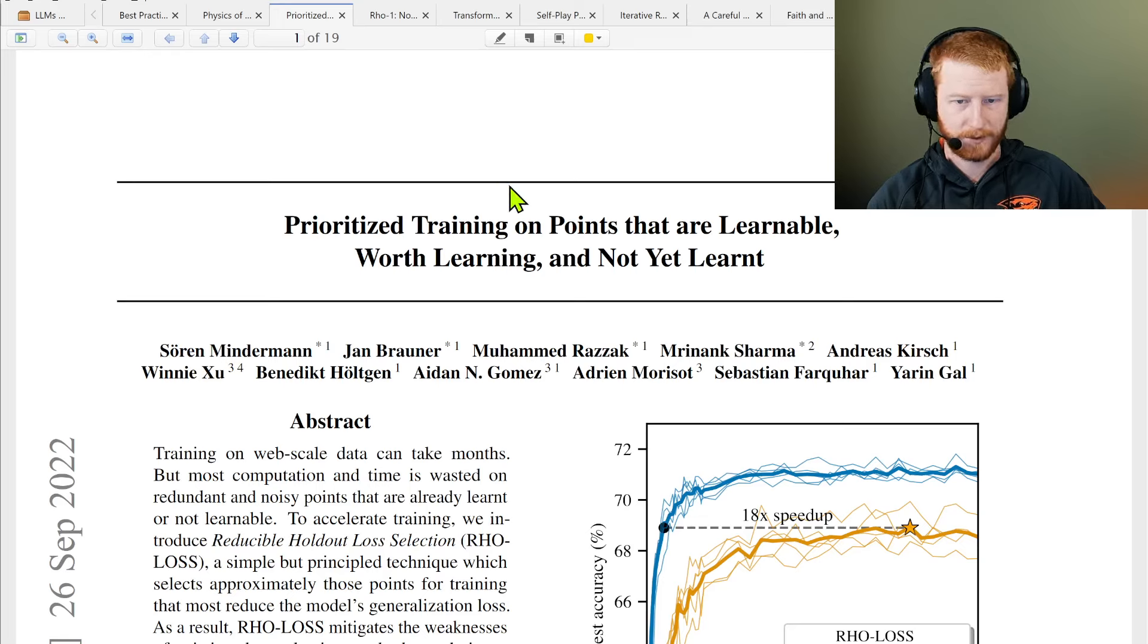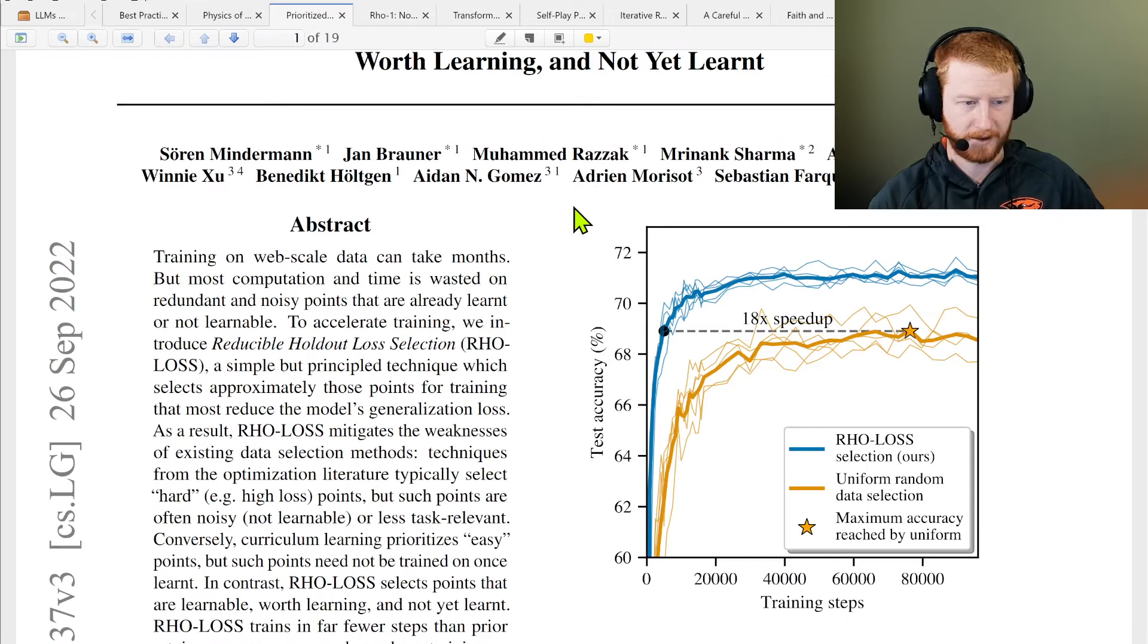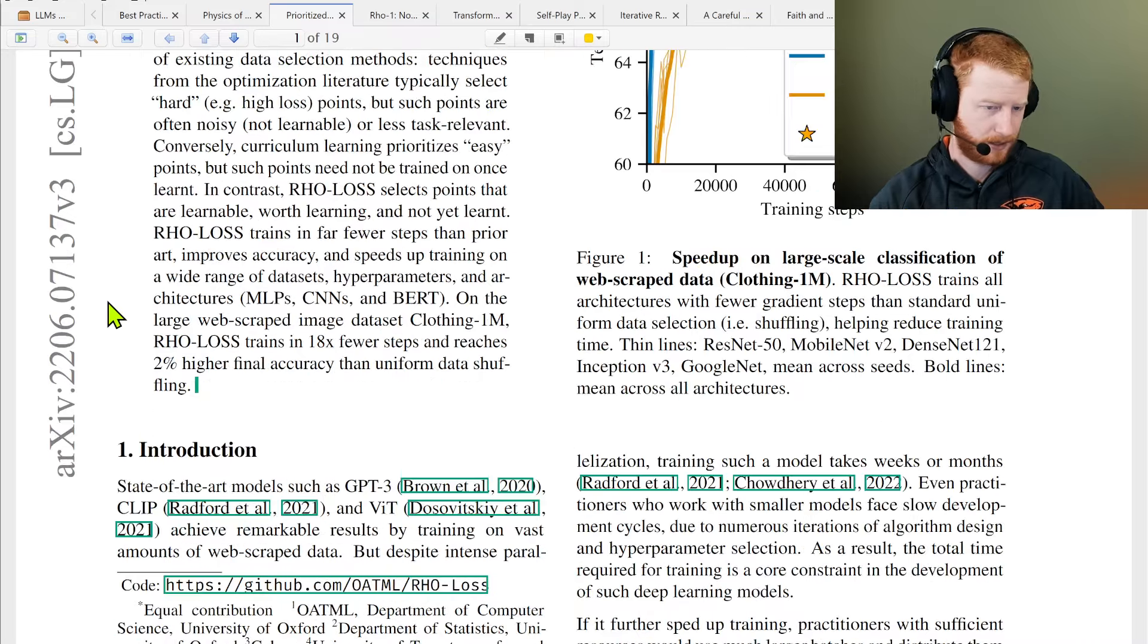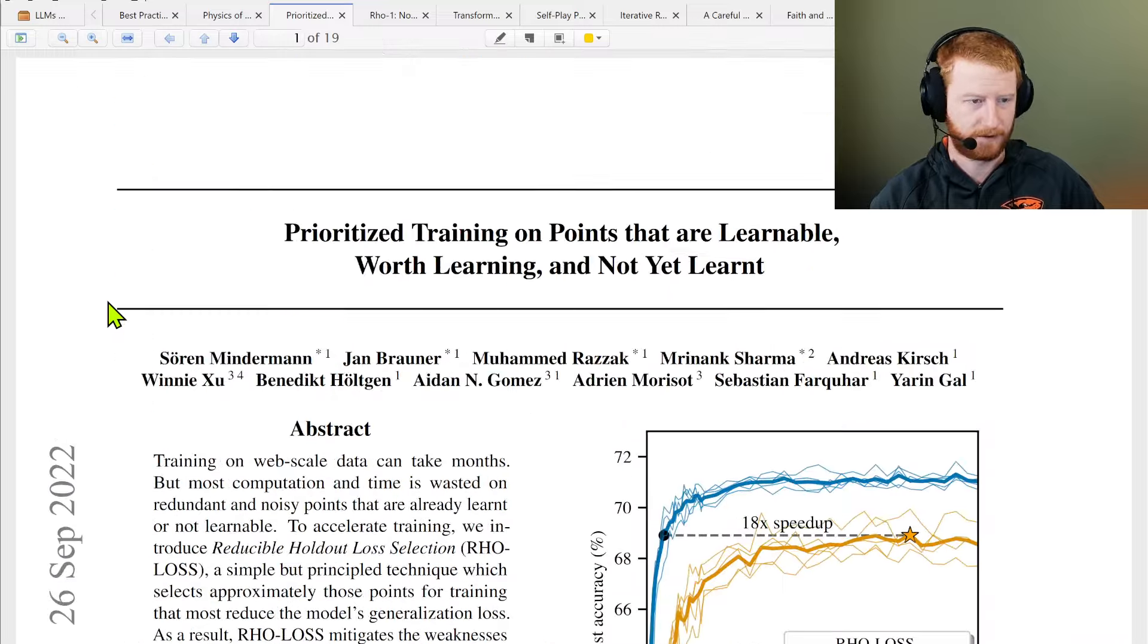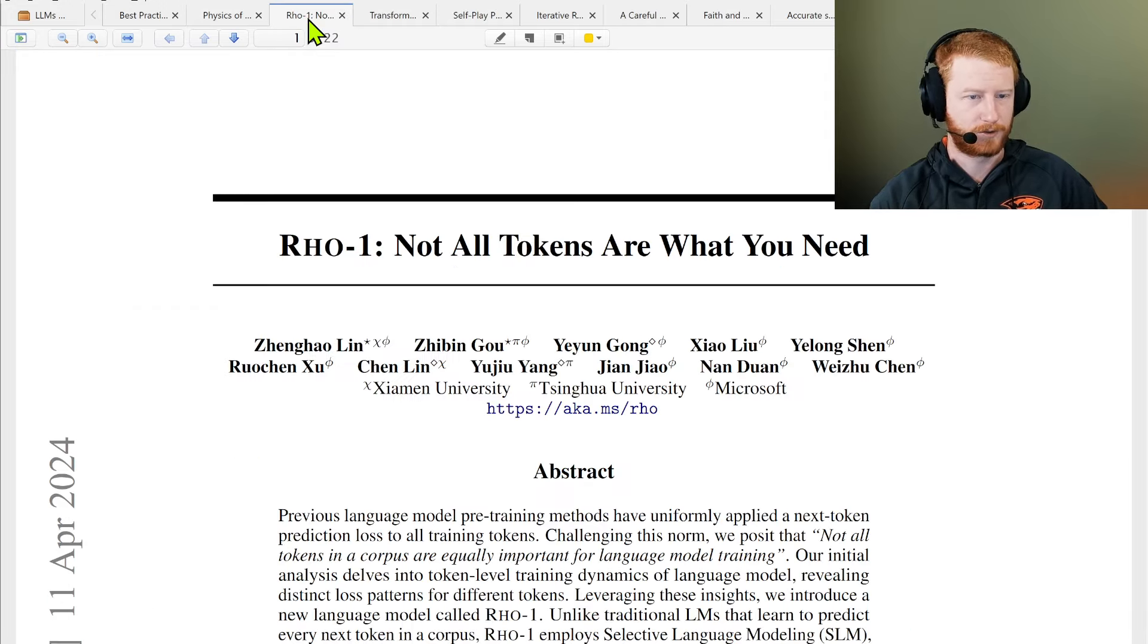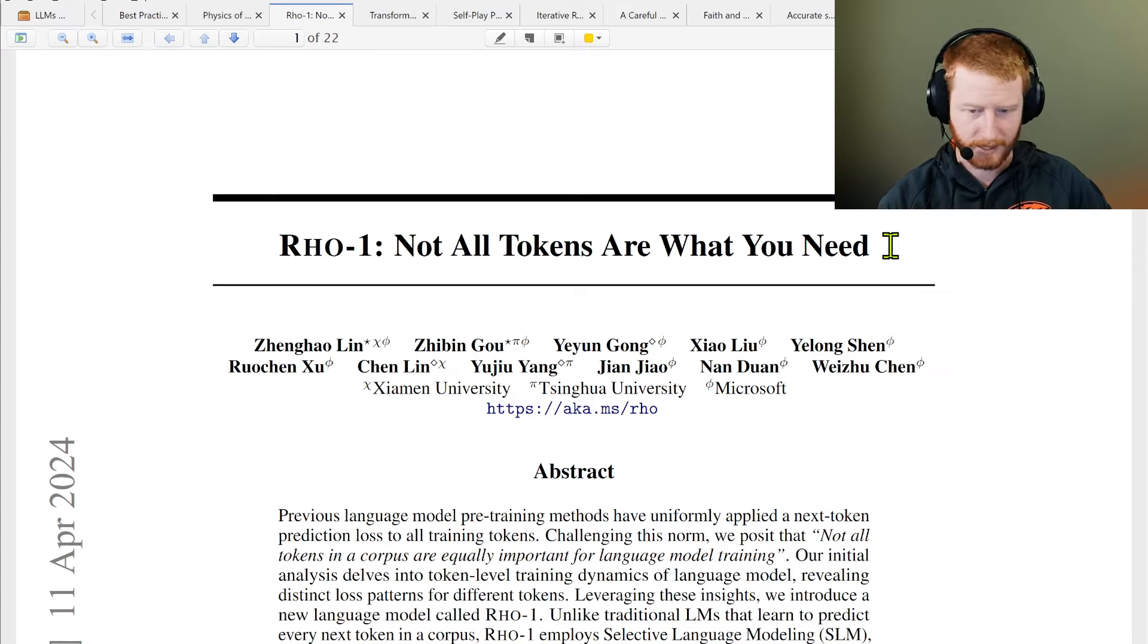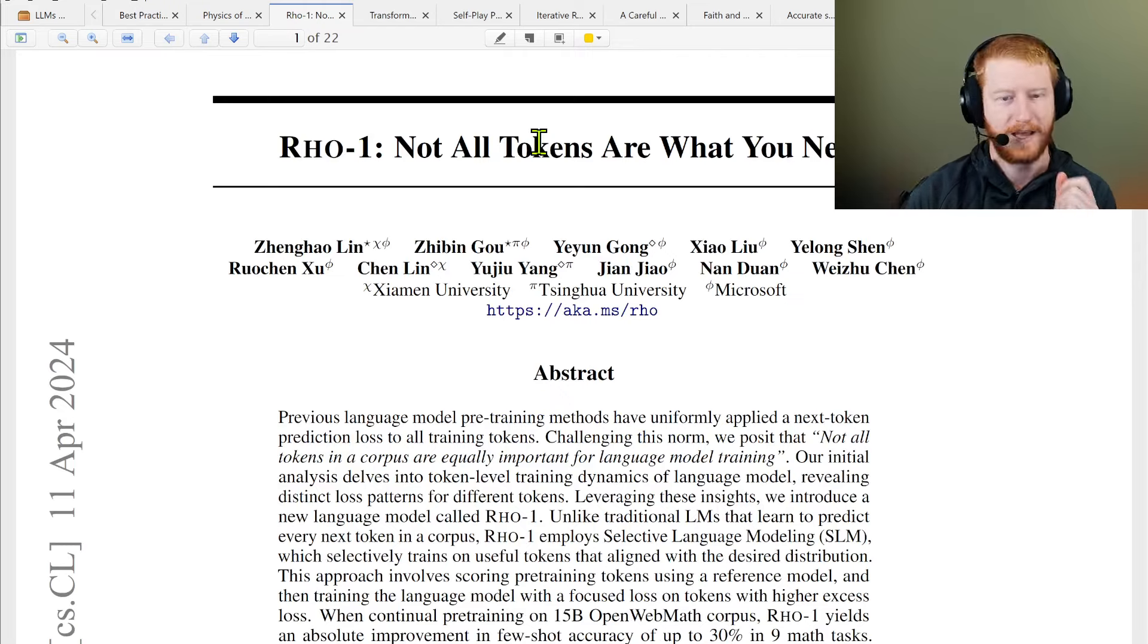Prioritize training on points that are learnable, with learning not learned yet. This is an older paper. I can't remember why it came up again, but something to do with choosing how do I choose which data points to train on. I can't remember why we were looking at this or what we pulled from it, but interesting enough old paper. Not that old, 2022, but still. That's right, because it's also called Rho. We have a more recent Rho paper that's also about what tokens do you need, and I don't think it even cites the other one.